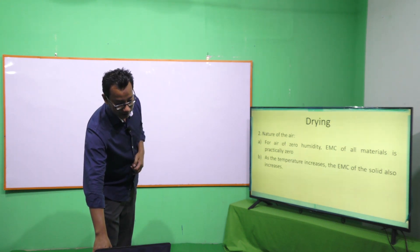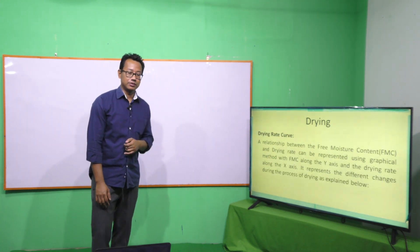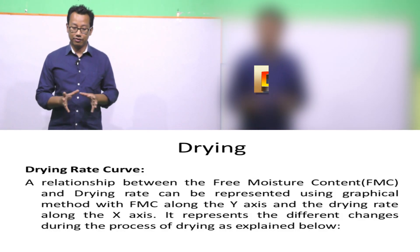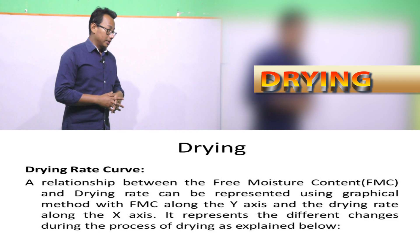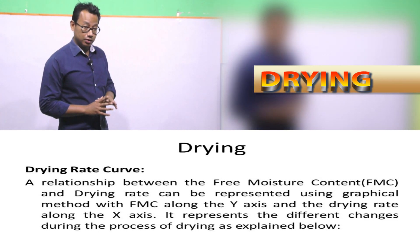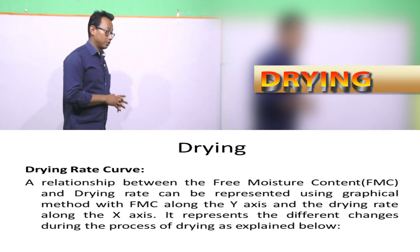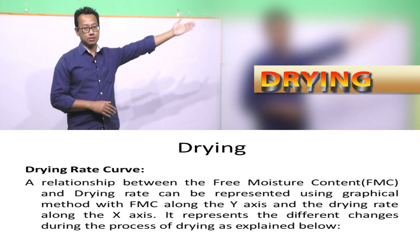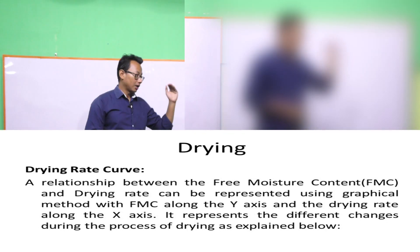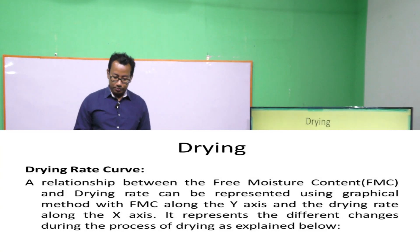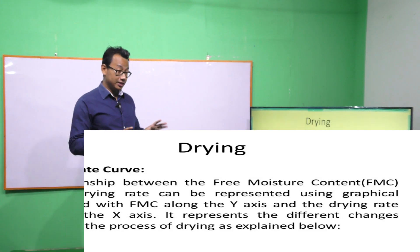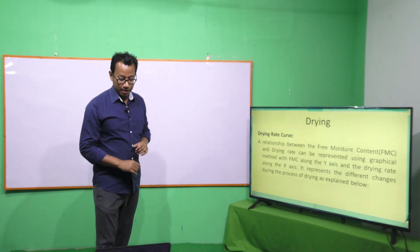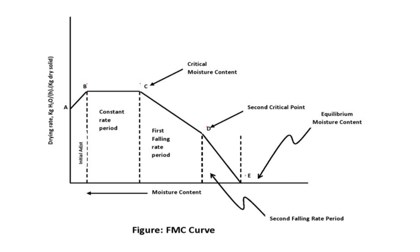This covers everything about EMC. The next topic is the drying rate curve, which represents the relationship between the free moisture content or FMC and the drying rate. This graph is also known as the FMC curve, where FMC is plotted on the y-axis (ordinate) and the drying rate is plotted along the x-axis. It represents the different stages or changes during the process of drying.